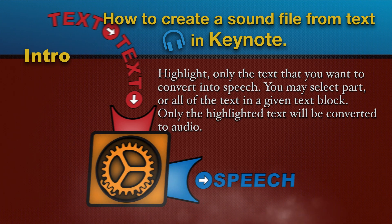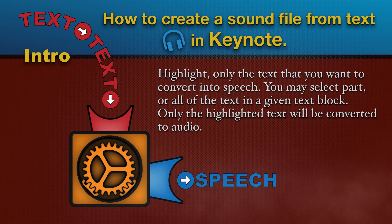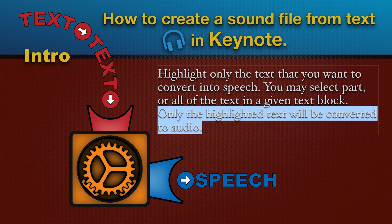Highlight only the text that you want to convert into speech. You may select part or all of the text in a given text block. Only the highlighted text will be converted to audio.